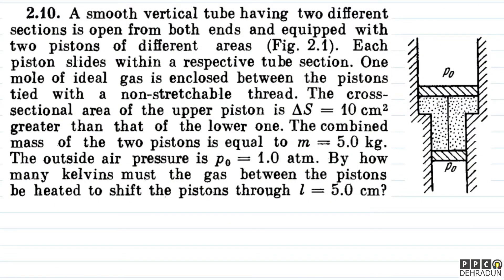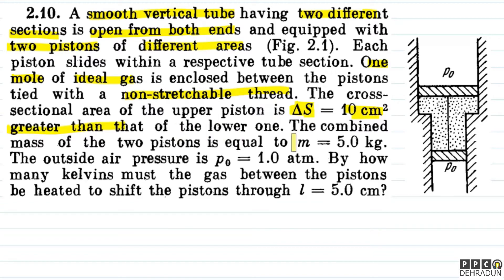Let's have a look at this beautiful problem from Irodov. The question says: A smooth vertical tube having two different sections is open from both ends and equipped with two pistons of different areas. Each piston slides within a respective tube section. One mole of ideal gas is enclosed between the pistons tied with a non-stretchable thread. The cross-sectional area of the upper piston is ΔS = 10 cm² greater than that of the lower one.